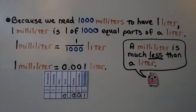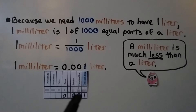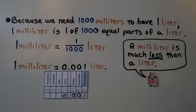Because we need 1,000 milliliters to have one liter, one milliliter is one of 1,000 equal parts of a liter — one one-thousandth of a liter. As a decimal, it is written as 0.001, because that's the thousandths place. A milliliter is much less than a liter.